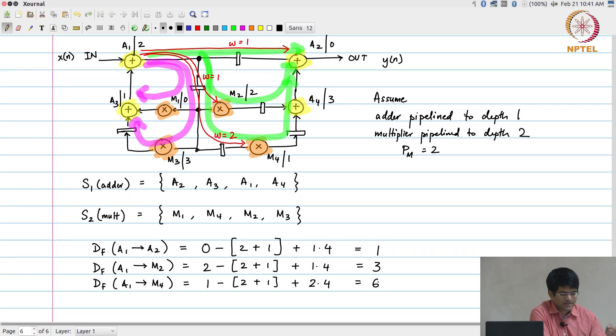Similarly, I can go ahead and calculate all the df values. One particular example I am just going to take because it also brings out, for example, the fact that we are using a multiplier from m2 to a4. The df that I would have from m2 to a4 would be equal to: what time is a4 scheduled? It is at 3. What time does m2 complete? It is scheduled at 2 and it has a pipeline latency of 2. So 3 minus 4 plus 1 times 4, basically it becomes 4 minus 1 is equal to 3.